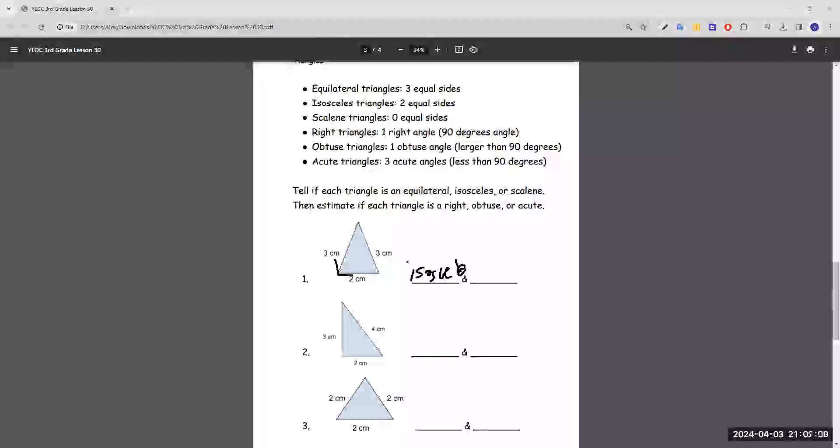And the triangle goes this much, which means it's less. Same thing for this one, it doesn't go all the way to 90. So it means that all three angles are acute, less than 90. So it's acute.